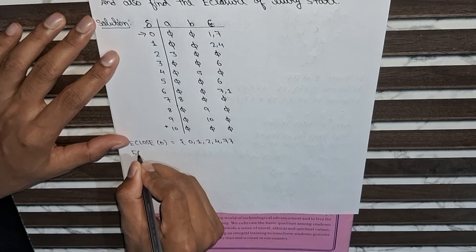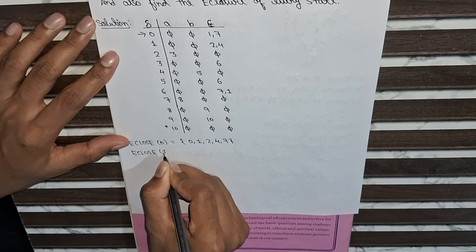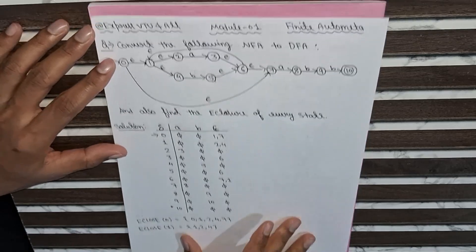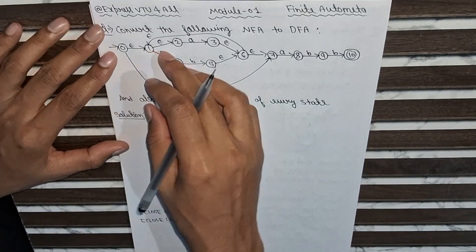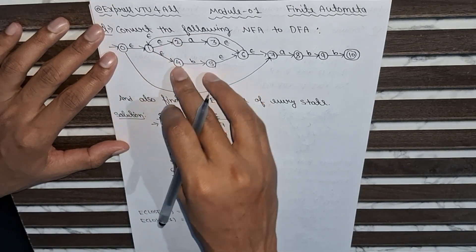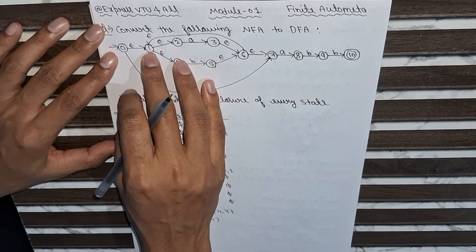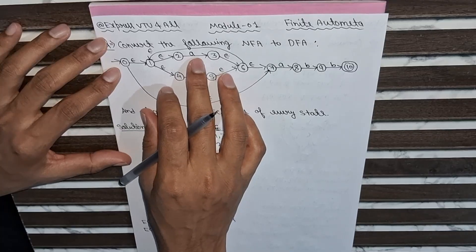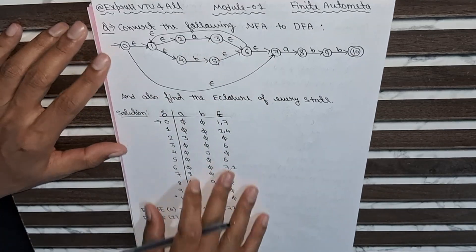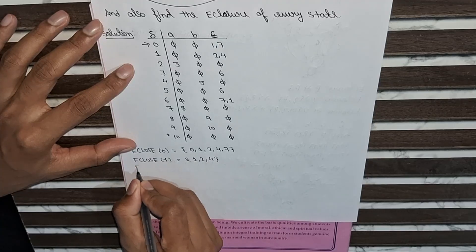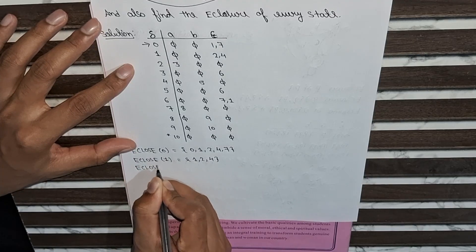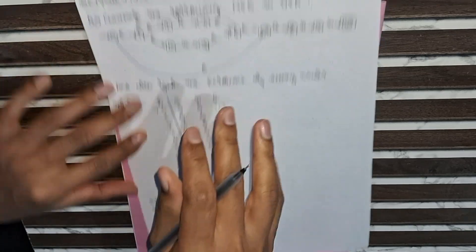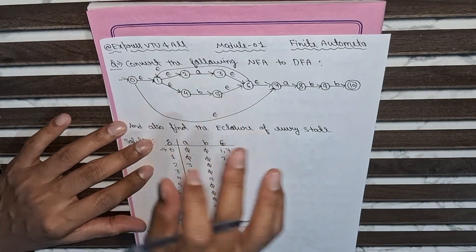E-closure of one will be one, two, four only. At state one with epsilon, two, four, and one itself are accessible. After two there is another variable a, so we cannot go there — that's why we have one, two, four. E-closure of two will be only two, because a symbol is there and epsilon is not there.